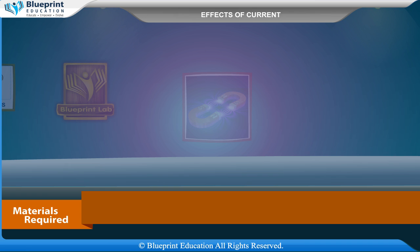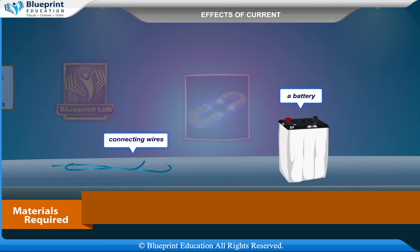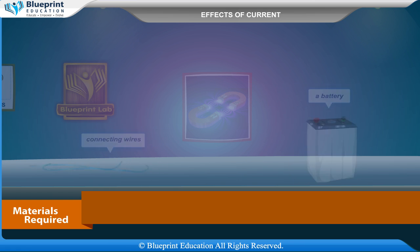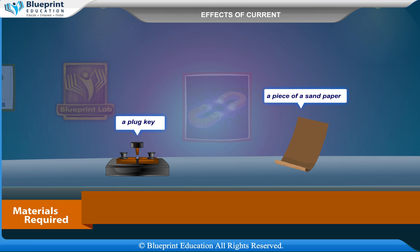The materials required are a resistor of about 2 ohm resistance, a DC voltmeter of 0 to 3 volt, a DC ammeter of 0 to 3 ampere, connecting wires, a battery, a rheostat, a plug key, and a piece of sandpaper.